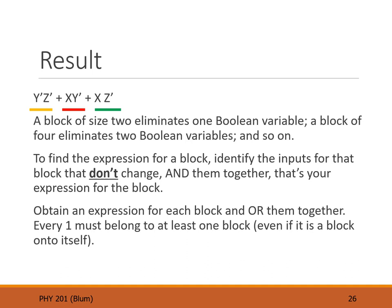All the ones in the output must be accounted for, even if they're in a group all by themselves. Once we've accounted for all the groups, we have the final expression. If a block is of size two, we eliminate one Boolean variable. If a block is of size four, we eliminate two Boolean variables. After identifying the block, we look back at the inputs, keep those that don't change and AND them together, throw away any that do change, then OR together all the block expressions for the full simplified result.